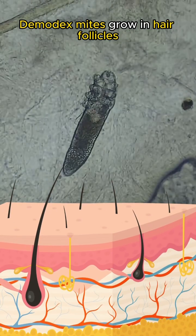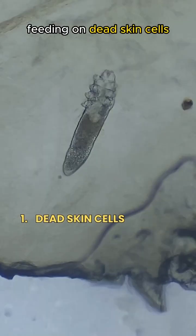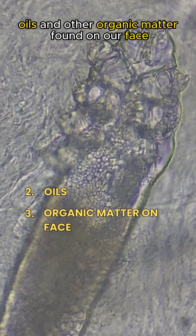Demodex mites grow in hair follicles and sebaceous glands, feeding on dead skin cells, oils, and other organic matter found on our face.